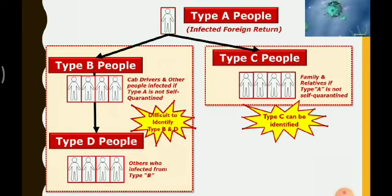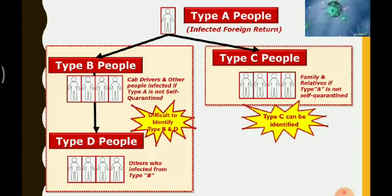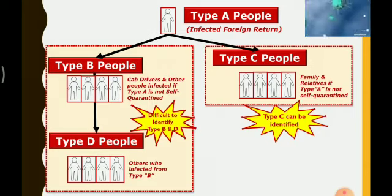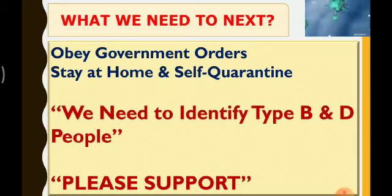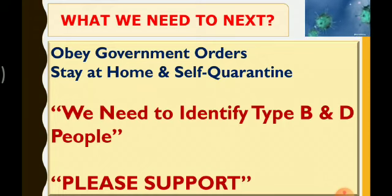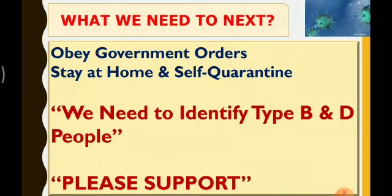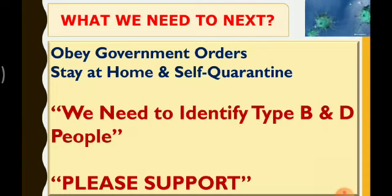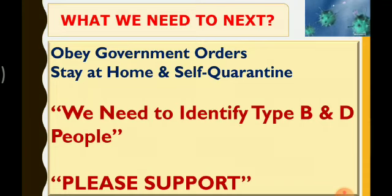Once they get infection, they can be quarantined easily. If you do not follow the 21-day lockdown, you will unknowingly keep infecting Type D people, and you yourself will get infected. That is why the government is insisting on following this 21-day shutdown. Please obey government orders, stay at home, self-quarantine yourself, and help identify Type B and D people.